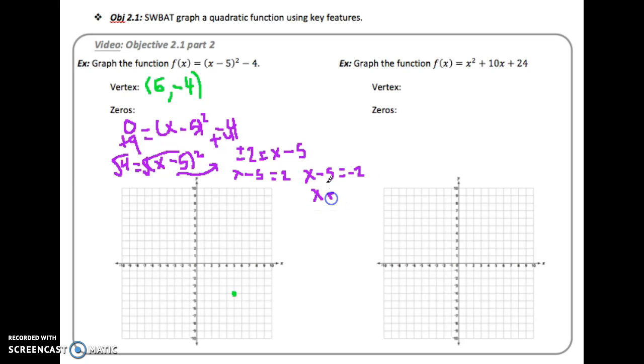This is going to give me a 0 at, I add 5 to both sides, this is going to give me a 0 at 3 and this is going to give me a 0 at 7. Okay so I go over and I'm going to put an x-intercept at 3. I'm going to put an x-intercept at 7 and you should notice that these are symmetric right? So this is 1, 2 away from where the axis of symmetry is and this is 1, 2 away from the axis of symmetry. Okay that is not a coincidence.